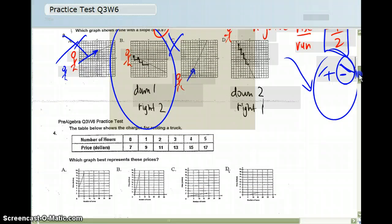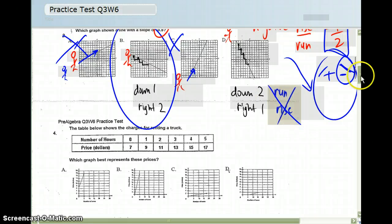D might be a common mistake in case if you flipped your run, if you accidentally did run, rise, which would have been incorrect if you accidentally did that.